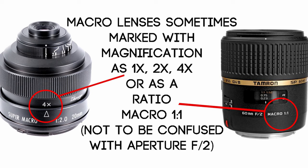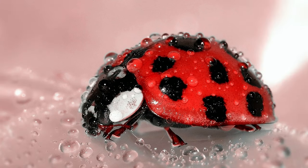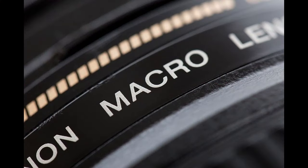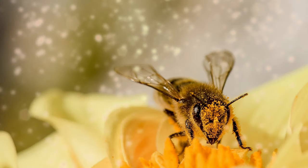Lenses may have markings for macro or magnification, such as a number followed by an X like 4x. Macro might also be marked as a ratio such as 1:1. Don't confuse this with your aperture. True macro allows the photographer to focus up close and get a life-size reproduction or larger on the image sensor. Macro lenses will often say macro on the lens, but be cautious — the label macro is sometimes used on lenses that do not really produce a true macro 1:1 ratio.